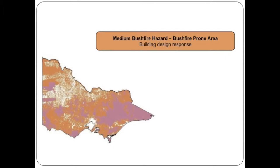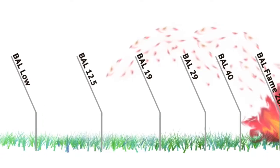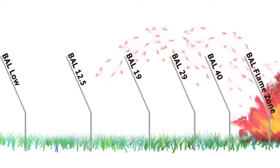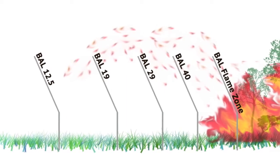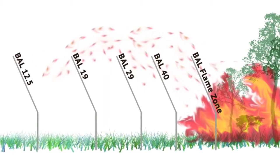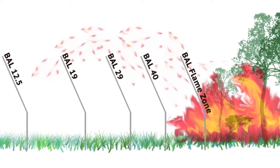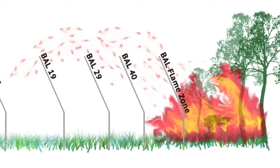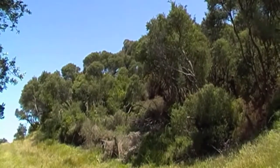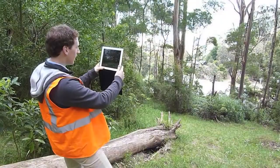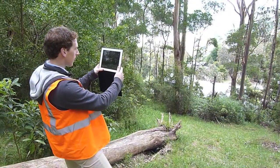The bushfire attack level, or BAL, indicates the construction requirements for building within a medium threat bushfire prone area. There are a range of bushfire attack levels that increase with the severity of the impact of a bushfire. The BAL is there to protect against ember attack and radiant heat from an approaching bushfire.